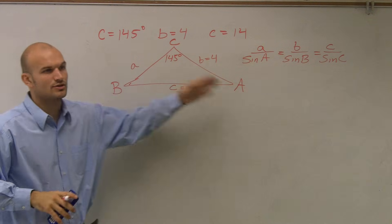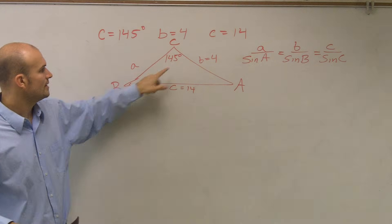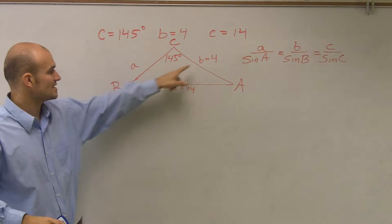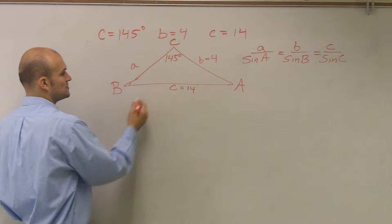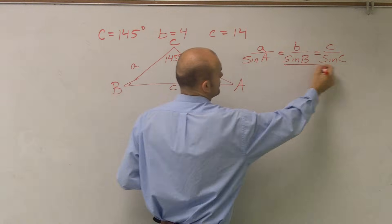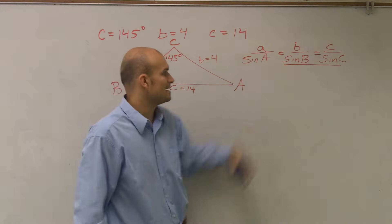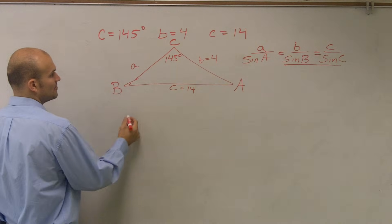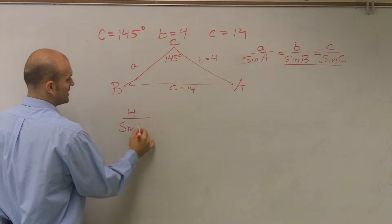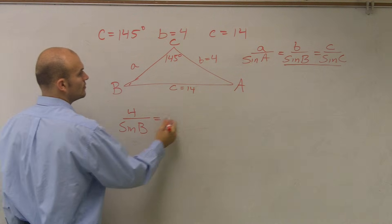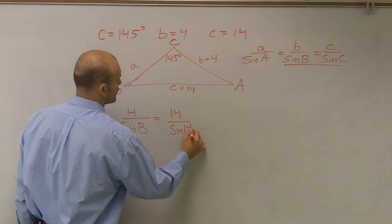Now, what I want to do for this problem is I know I don't know either A, so I'm not going to want to use that first proportion. The first thing I'm going to want to do is figure out B. That's my missing angle. So I'm going to set up a proportion with the C's and the B's. I don't know any information for A or sine of A, right? So I'm just going to use this information to solve for sine of B. So what I have is b, which is 4, over sine of B, which is equal to 14 over sine of 145.